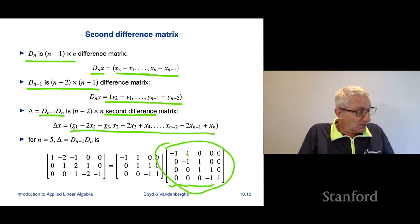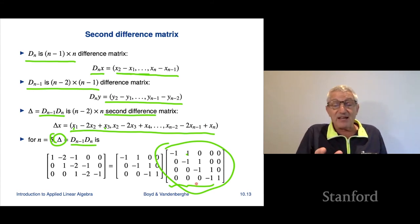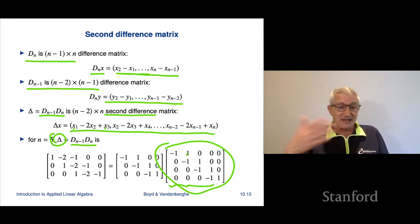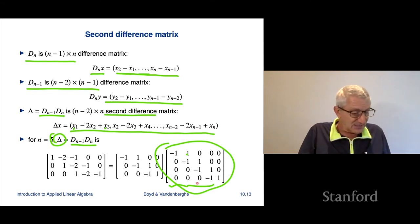So we'll call Delta this matrix Dn minus 1 Dn. And let's do this for n equals 5. So here it is. Here is the 4 by 5 difference matrix. And what it does, it takes a 5 vector and it spits back the four differences. The differences being the second minus the first, third minus the second, fourth minus the third, and fifth minus the fourth. So that's what this one does.